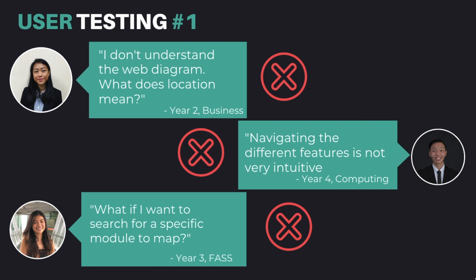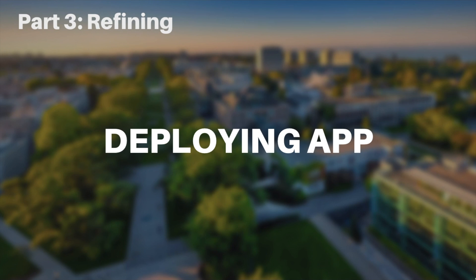However, some users found some features confusing and suggested we included tips to make the app more intuitive. Other users also wanted to see more features that allowed them to search for specific modules that they want to map. Thus, a new feature was added allowing students to search for a module to see what universities it can be mapped to. With our user feedback, we were able to prioritize the features we needed to build our application.